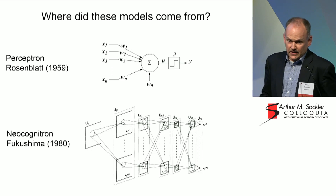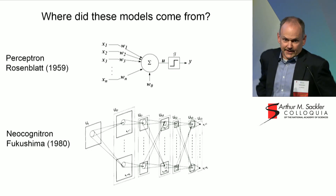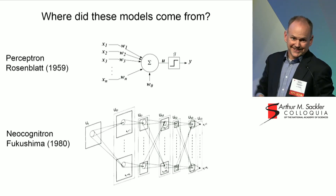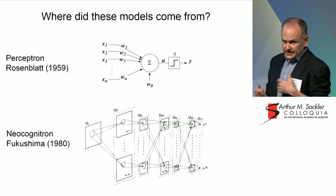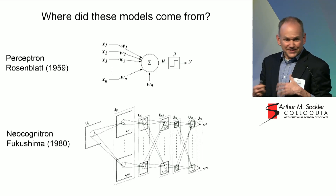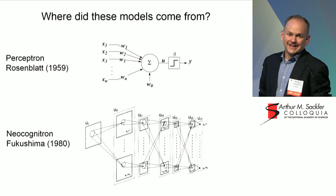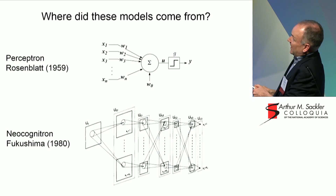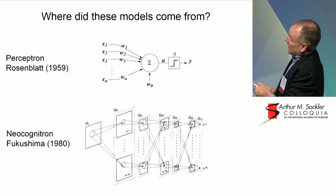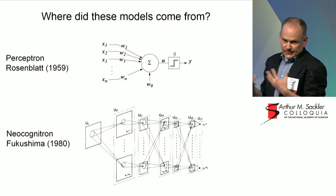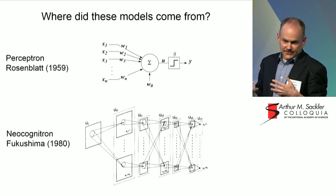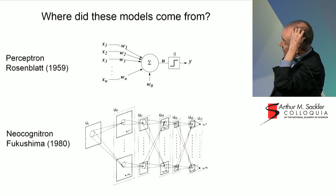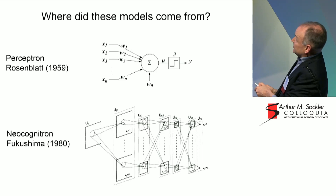If we just look at the models we're using in the field, it's very interesting to ask where did these models come from? How did we get here? Well, we got here from Frank Rosenblatt in the late 1950s, making a very simple model of what he thought was a neuron at the time, just sort of making that go and developing learning rules from that.